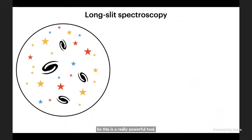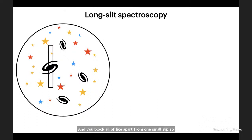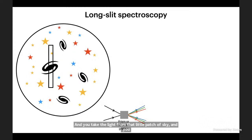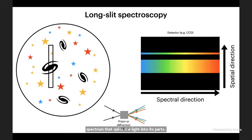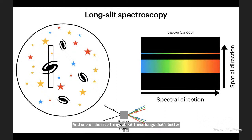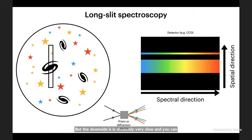How does this work in practice? Traditionally, you block all the light apart from one small slit — we call this a long slit. You take the light from that little patch of sky and pass it through your prism or diffraction grating and spread it onto your detector — in modern times a CCD like you have in your phone. One of the nice things about long slit spectra is you have a spectrum for every point along the length, so for a large galaxy you can get a spectrum at every point. But the downside is it's very slow and you can only look at one or two objects at a time.